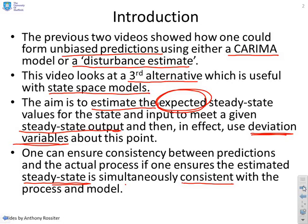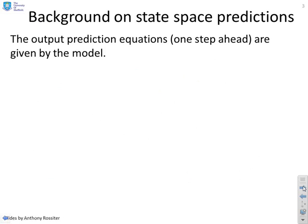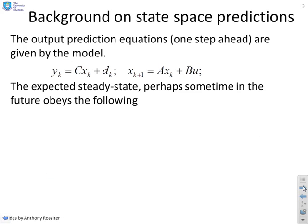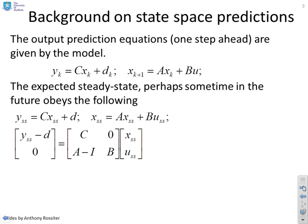So a reminder of what happens with state-space predictions. Assume first of all you have your standard model, y_k equals Cx_k plus d_k, x_{k+1} equals Ax_k plus Bu. Now if you assume you're at steady-state whenever that happens, then you will have the following. You will have the y_ss, the steady-state output, equals Cx_ss, x_ss being the steady-state state plus disturbance, whatever that is. And also the steady-state state x_ss equals Ax_ss plus Bu_ss, where u_ss is the steady-state input.